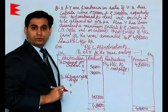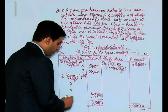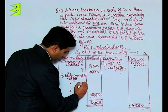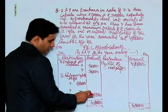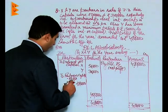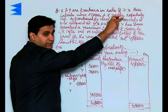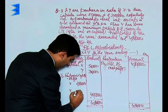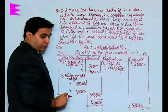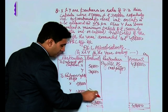That means X will get 2 lakh 80,000. We can calculate it as 4 lakh into 7 by 10. For Y it would be 4 lakh into 3 by 10, which is 1 lakh 20,000. I will just erase this as it was for calculation purposes.